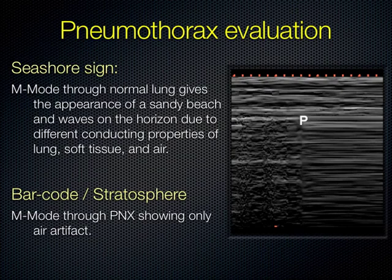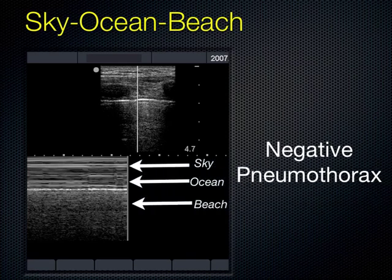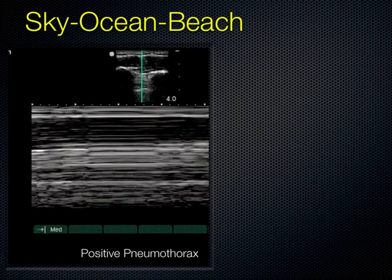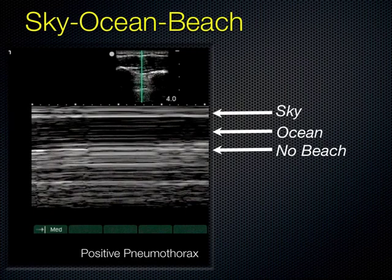Here's an M-mode example through the pleural interface: you can appreciate a definite sky, with the pleural line as the horizon, and a beach more inferiorly due to the motion of the lung. By contrast, an upper picture with A-lines could be pneumothorax or normal, but when you put M-mode through it, you have no beach — just a barcode. That's a pneumothorax. In your models today, if you ask them to hold their breath carefully during M-mode, you'll be able to see the stratosphere sign and barcode — because if the lung's not moving, you won't get that graininess.